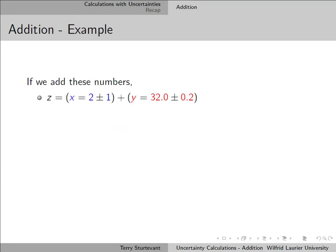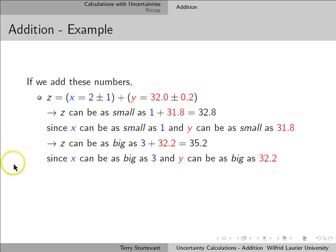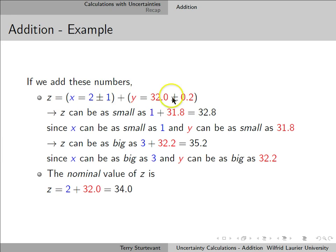Suppose we call z the sum of these two quantities. The smallest value of z will be when we add the smallest value of x to the smallest value of y. The biggest value of z will be if we use the biggest value of x and add it to the biggest value of y. The nominal value of z is what we get if we ignore the uncertainties and just add the nominal value of x to the nominal value of y.